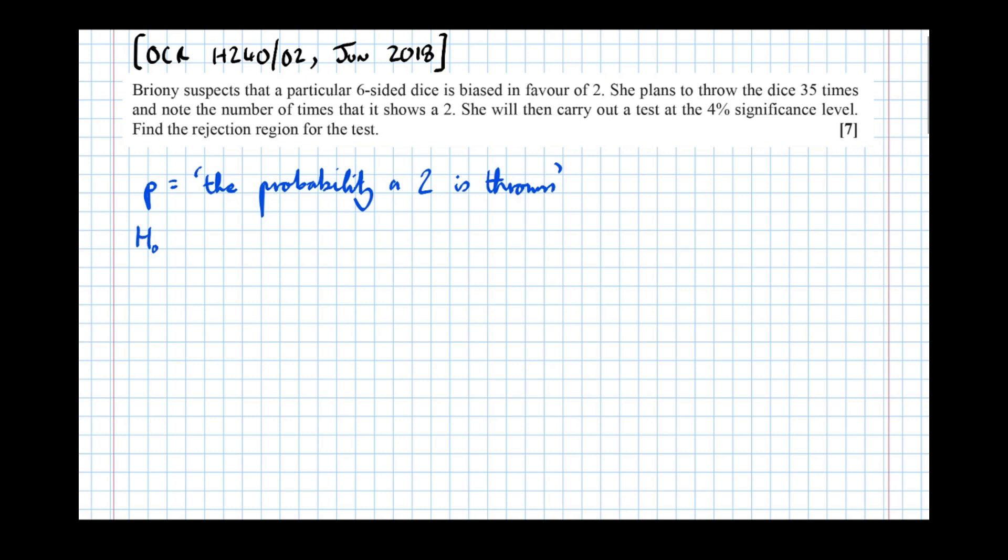And the null hypothesis, well, if it's a fair dice, if we're sitting on the fence, probability is a sixth. The alternate hypothesis, it says that it's biased towards a two. So the probability of throwing a two is greater than one-sixth.